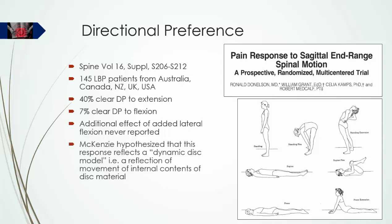It was McKenzie's hypothesis that this phenomenon is a direct reflection of what is called the dynamic disc model of biomechanics in the spine. In other words, the change in pain intensity and location is a direct reflection of increasing and decreasing displacement of the internal disc contents.